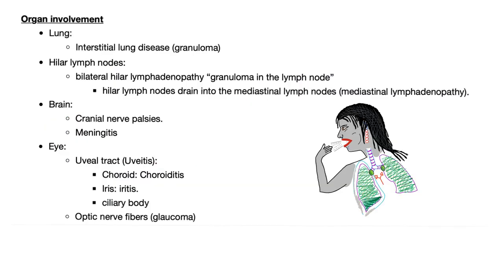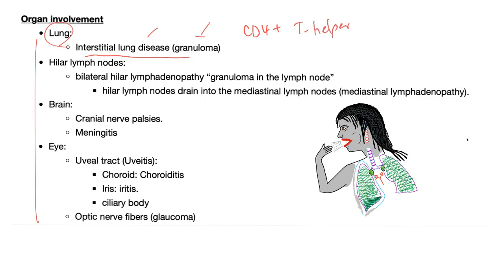The lung is always involved because the antigen is probably airborne, leading to granuloma. Sarcoidosis is all about the non-caseating granuloma driven by CD4-positive T helper cells. That's why we can do a test called the CD4 to CD8 ratio — CD4 cells are always higher in number than CD8, so the ratio is 4 to 1 or greater.